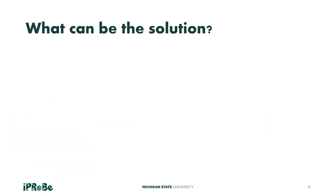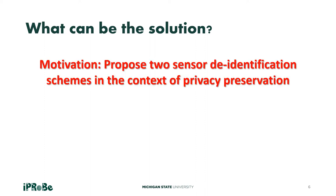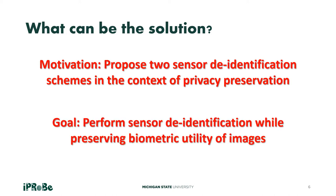How do we address such concerns? We propose two sensor de-identification schemes in the context of privacy preservation. Our main goal is to perform PRNU-based sensor de-identification on biometric images such as face, iris, or periocular images. In this context, we will suppress the sensor-specific information but still retain the biometric information.